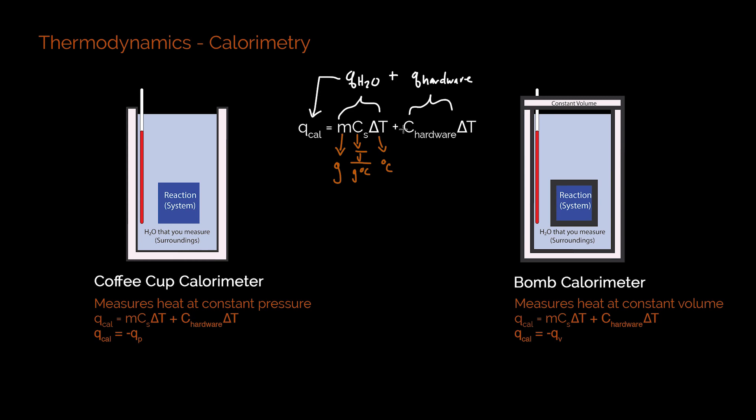Over here for the hardware, I don't have a specific heat capacity. What this means is that the mass of that particular hardware should already be included in that term. This is what we call an extensive property, and what that means is it's already dependent on the amount that you have there.